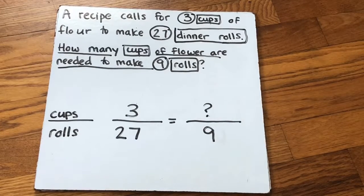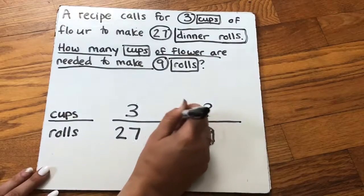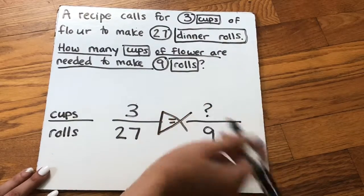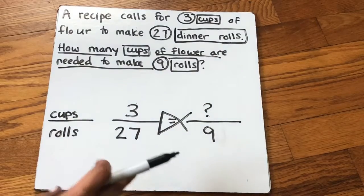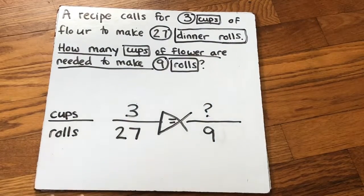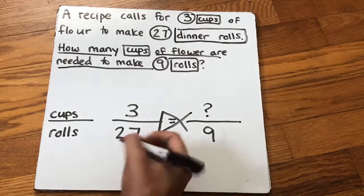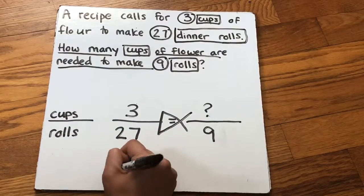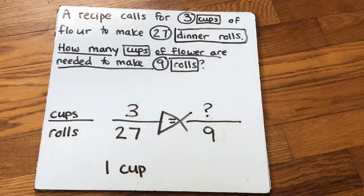To solve this, we solve it just like we do unit rates — we're going to cross multiply and divide. So nine times three is 27, divided by 27 is one. So one cup of flour.